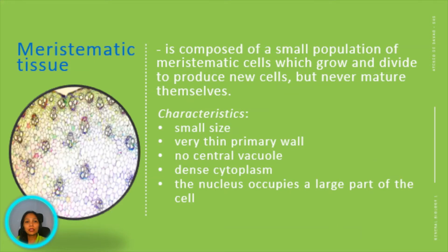Meristematic tissue is composed of a small population of meristematic cells which grow and divide to produce new cells, but never mature themselves. Thus, all plant cells are derived by mitosis from meristematic cells. The new cells produced then develop into various cell types.